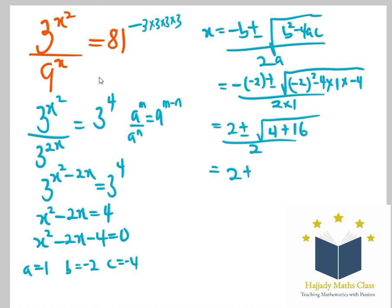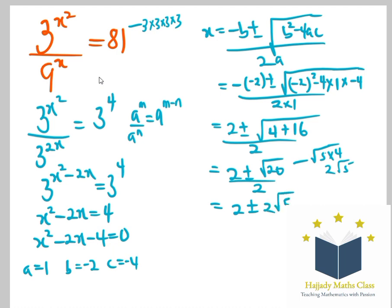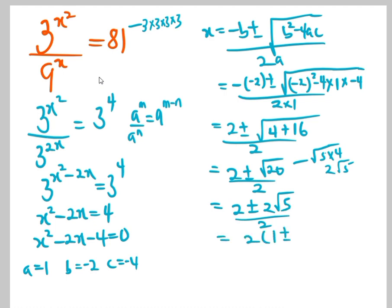So, here I have 2 plus or minus square root of 20, all over 2. Now, root 20 is the same thing as root of 5 times 4, and the square root of 4 is 2, giving 2 root 5. So, I have 2 plus or minus 2 root 5 over 2, and factorizing 2 out, I have 1 plus or minus root 5.